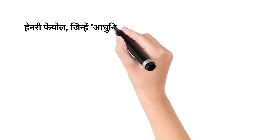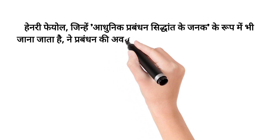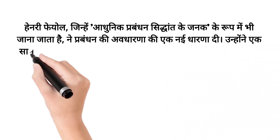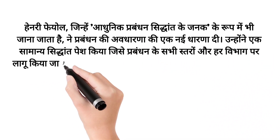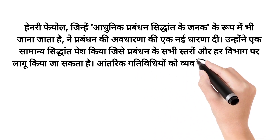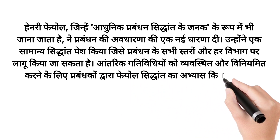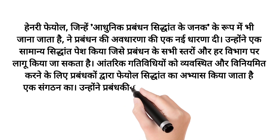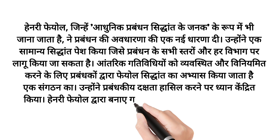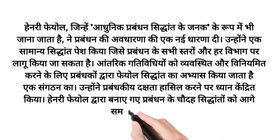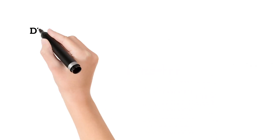Hindi: Henry Fayol, jinhe adhunik prabandhan siddhant ke janata ke roop mein bhi jana jata hai, ne prabandhan ki avdharana ki ek nai dharana di. Unhoonne ek samaanya siddhant peish kiya jise prabandhan ke sab istaaron aur har vibhag par lagu kiya ja sakta hai. Antarik gatividhiyon ko vyavasthit aur viniyamit karne ke liye prabandhan dwara Fayol siddhant ka abhyas kiya jata hai. Unhoonne prabandhan dakshata haasil karne par dhyan kendrit kiya. Henry Fayol dwara banaye gaye prabandhan ke 14 siddhanton ko aage samjhaya gaya hai.